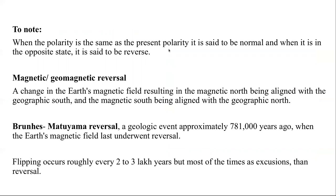When the polarity is the same as the present polarity, it is called normal polarity. When it is opposite to the present geomagnetic field, it is called reverse magnetic polarity. A geomagnetic reversal results in magnetic north aligning with geographic south. The most recent reversal is the Brunhes-Matuyama reversal, named after paleomagnetists Brunhes and Matuyama, a geological event that occurred approximately 781,000 years ago.